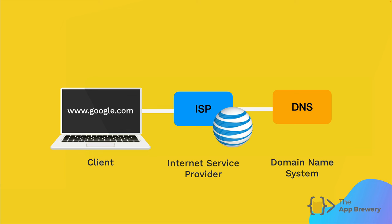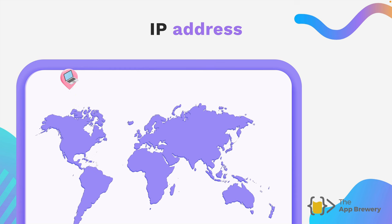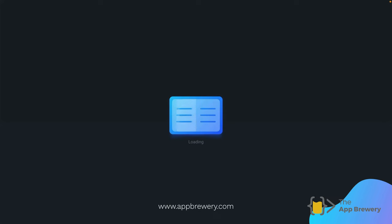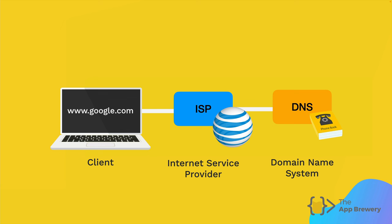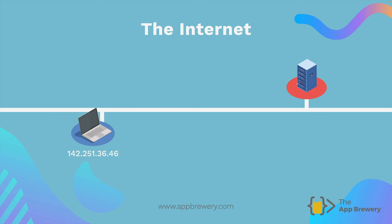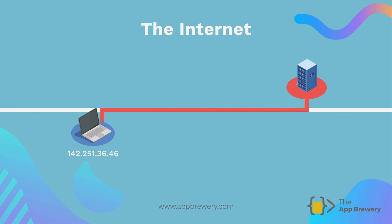A DNS server is essentially just a souped-up phone book. When you make that request through your browser, the DNS server will look up in its database to find the exact IP address of the website you're trying to access. Every single computer connected to the internet has an IP address — it's kind of like a postal code for your computer, so that when people need to send and receive files, each computer can be located and contacted using their unique IP address. Once the DNS server finds that IP address, it sends it back to your browser through the ISP, and you can make a direct request to that address. What lives at that IP address is, of course, the Google servers, and they'll send you back all the files and data you need to view the Google homepage.